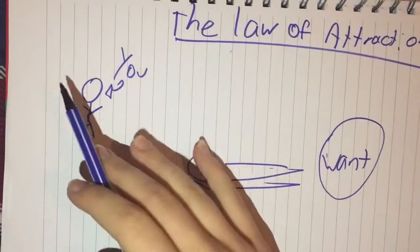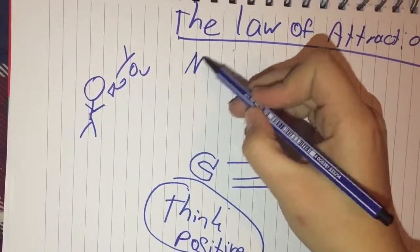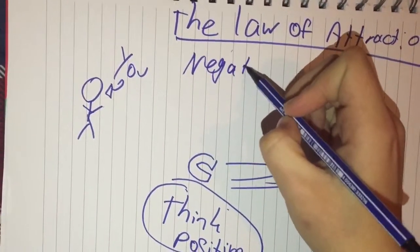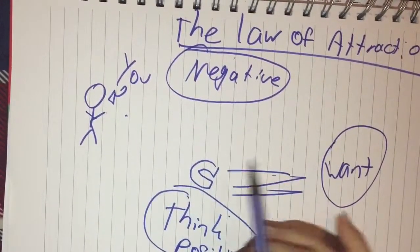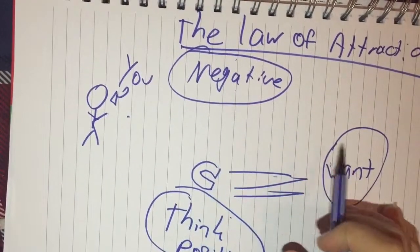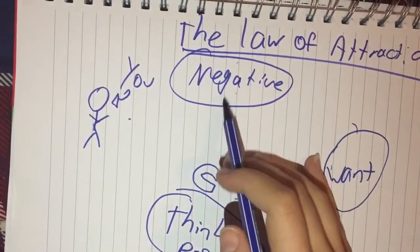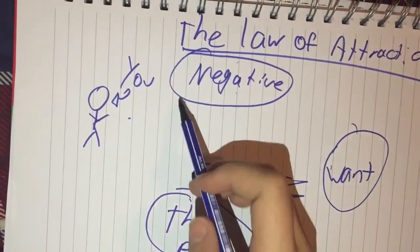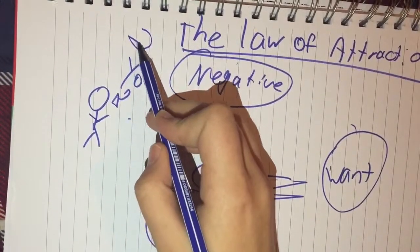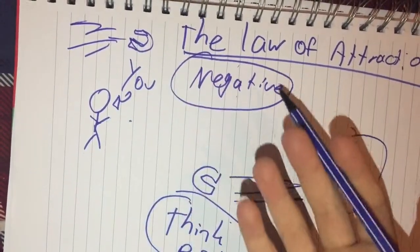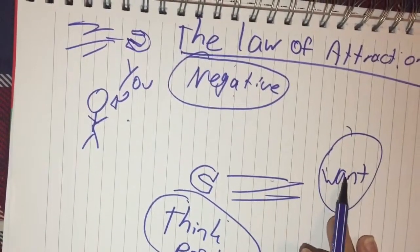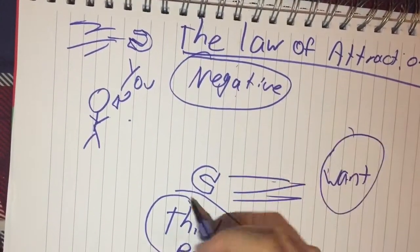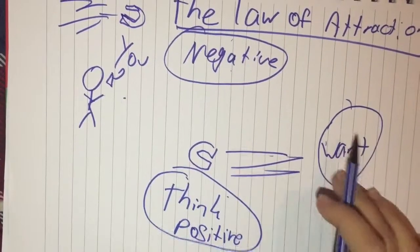However, if you think negative, then you will not get there, because your negative thoughts won't attract what you want. You're thinking that you can't get this, so your thoughts will attract something else, something you don't want. Therefore, you have to think positive in order to get what you want.